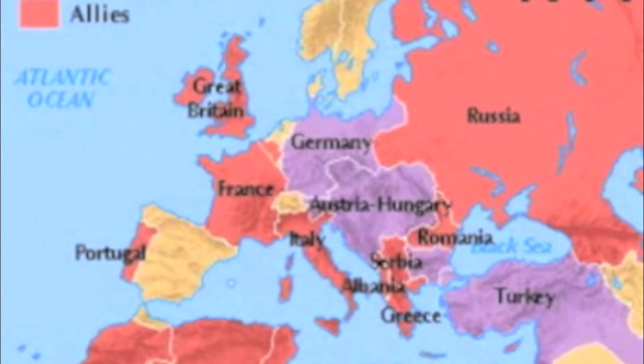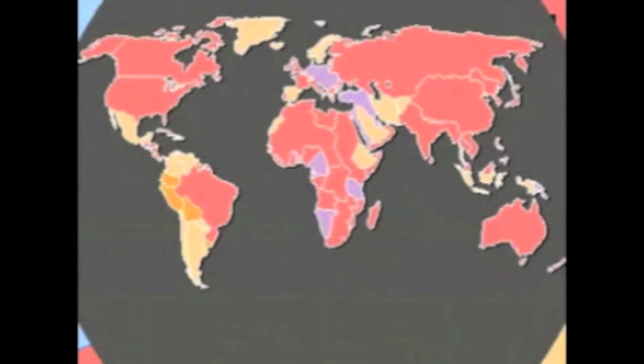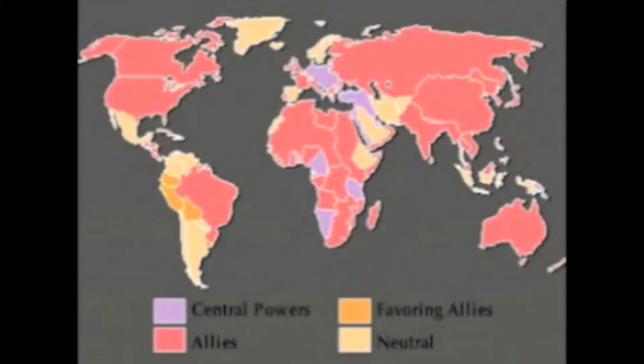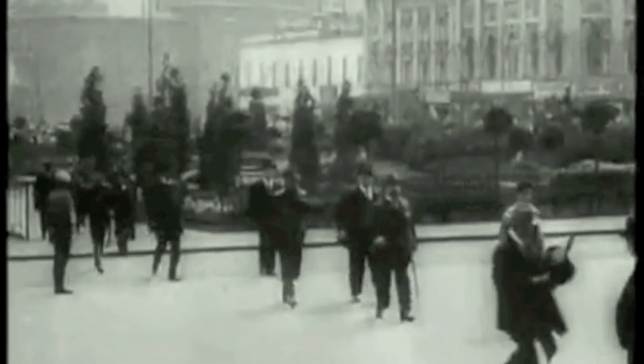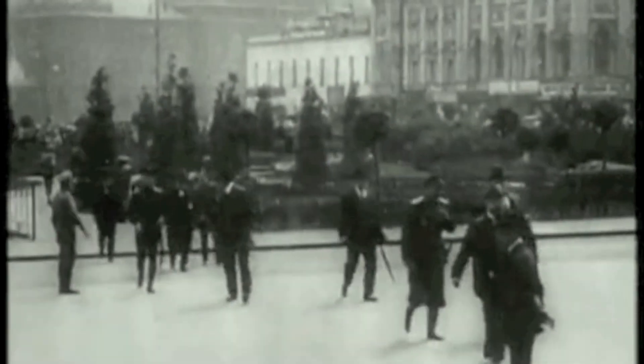Other European powers were soon drawn into the conflict, and it eventually turned into a global war. The United States joined the Allies on April 6th, 1917. Russia dropped out of the war the same year because the Bolshevik Revolution was taking place — commonly known as the October Revolution, even though it occurred in November.